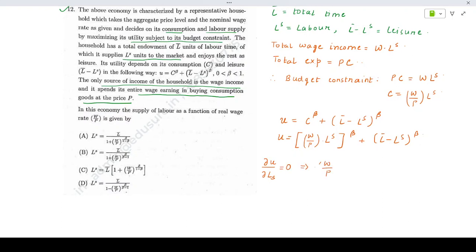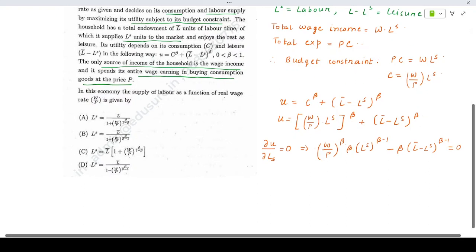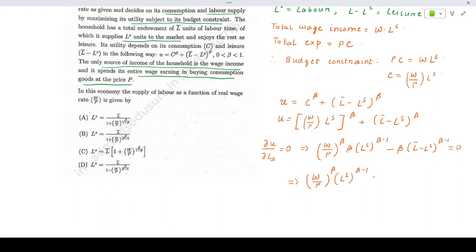That will be W by P to the power beta. That would be W by P times LS to the power beta minus 1. The beta LS to the power beta minus 1 equals L bar minus LS to the power beta minus 1.